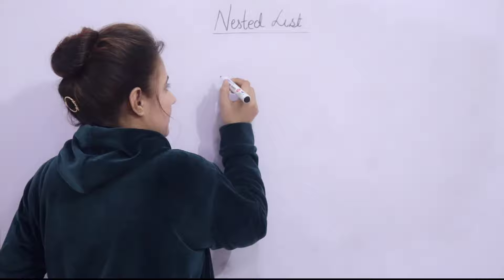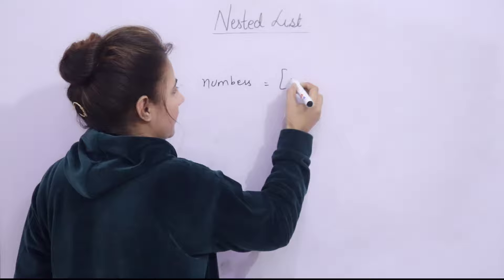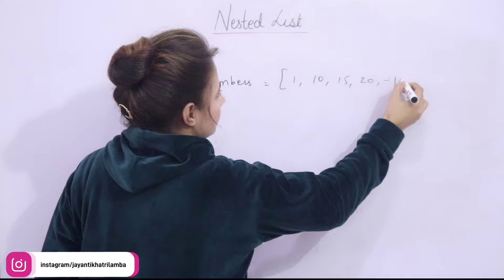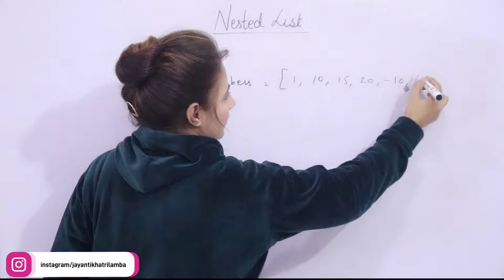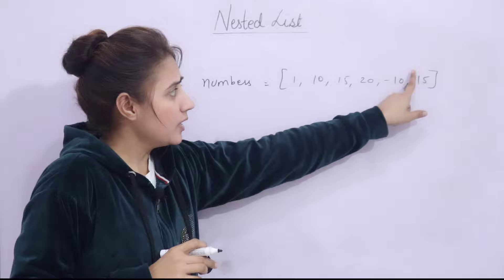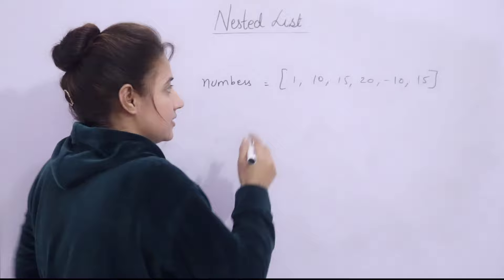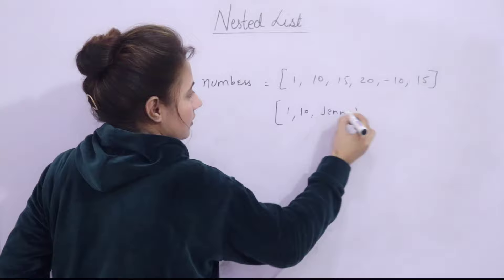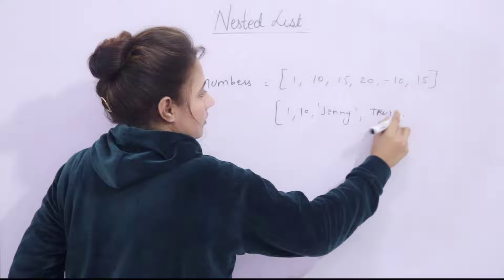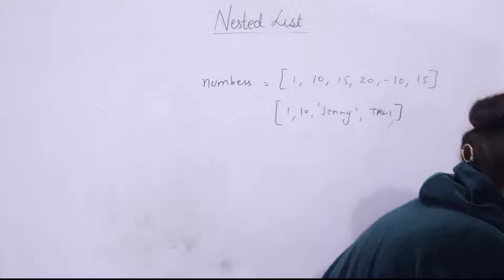Suppose I make a list of numbers: numbers = [1, 10, 15, 20]. Duplicate elements are also allowed. A list need not be homogeneous — for example, [1, 10, 'jenny', True] is also a valid list containing an integer, a string, and a boolean. So a mixed data type list is also possible.